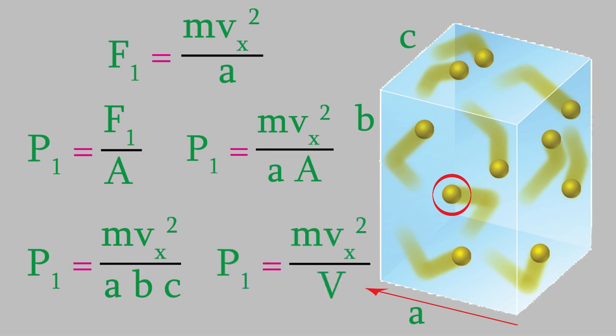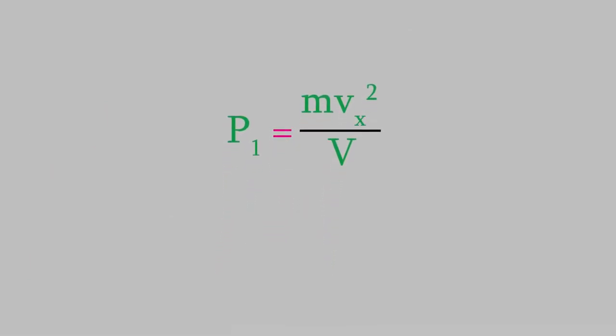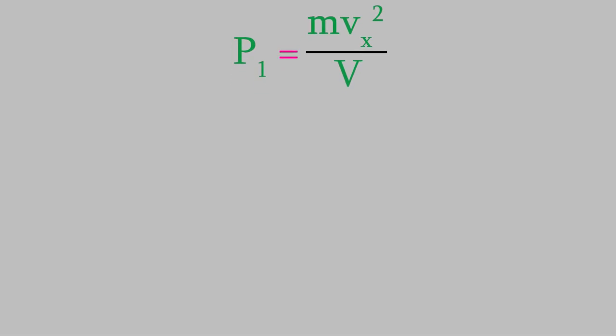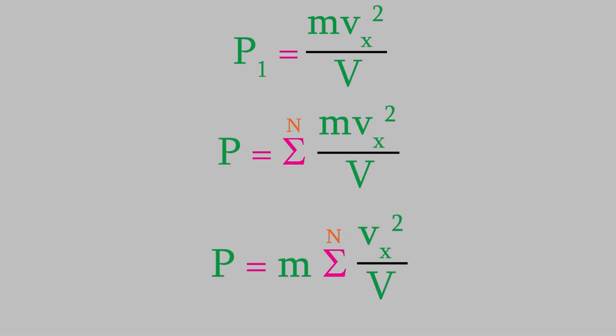We're making good progress and almost have an equation that will be very useful for understanding the motion of these molecules. But we're not really interested in the pressure from just one particle — we want the overall pressure. To get that, we need to add mvx² over volume for all the particles, which we write with a summation sign over n particles. Since all molecules of one gas have the same mass, we can pull mass out of the summation. The volume is also a constant and can come out of the summation sign as well.